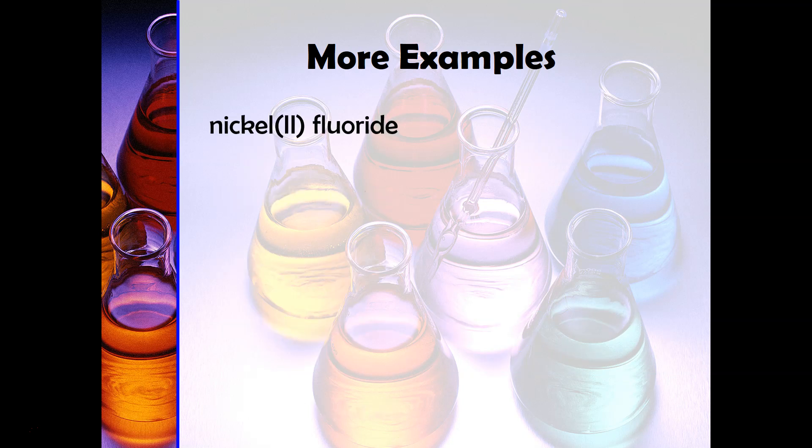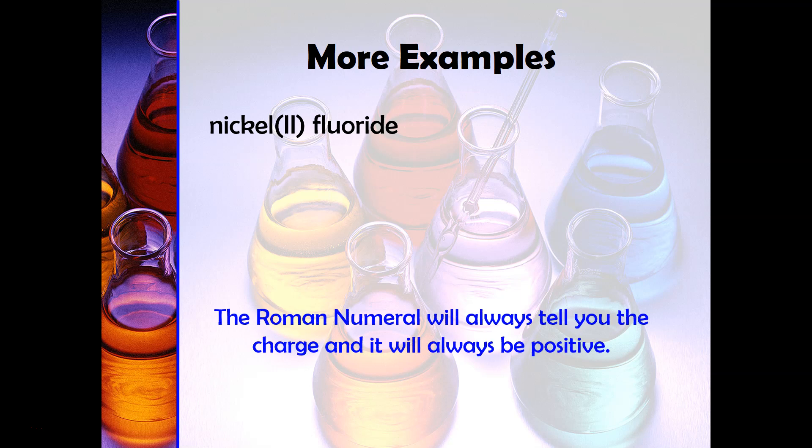Here's another example: nickel two fluoride. So the two that you see in the middle there is a Roman numeral and so with this you're probably saying oh I don't know what this means. Well if you look where nickel is on your periodic table you'll also see this in the transition metal section so this is another one that you really don't know what the charge is. But fortunately the two as the Roman numeral will tell you the charge and it will always be positive because it's a metal. And so the nice thing about this is that you would just have to write nickel with a two plus and then you'll have to add another fluoride ion and it'll be NiF2.